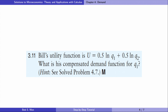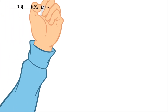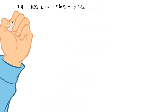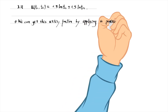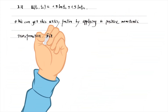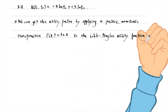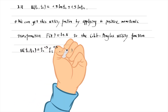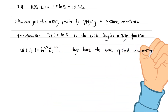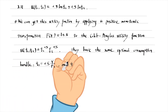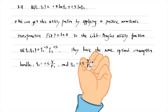Let's solve exercise 3.11. Bill's utility function is as follows. What is his compensated demand function for Q1? We notice that the utility function is equivalent to a Cobb-Douglas utility function. We can get it by applying a positive monotonic transformation to the Cobb-Douglas utility function U equals Q1 to the power 0.5 times Q2 to the power 0.5. The positive monotonic transformation will not change the shape of the indifference curves, so they have the same optimal consumption bundle: Q1 equals 0.5 times Y over P1 and Q2 equals 0.5 times Y over P2.